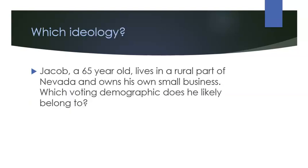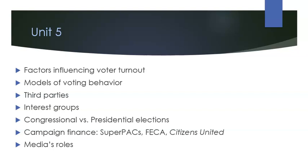Jacob, a 65-year-old who lives in a rural part of Nevada and owns his own small business — which voting demographic does he likely belong to? If you said conservative or Republican, that would be right. Older, rural area, small business owner — and males also tend to lean a little bit more conservative.